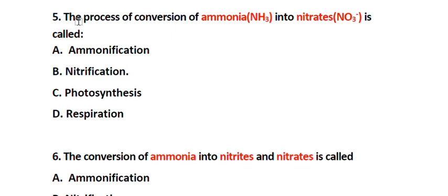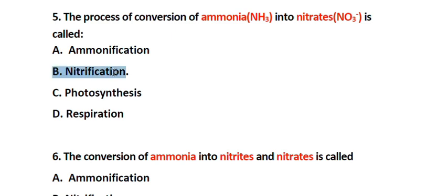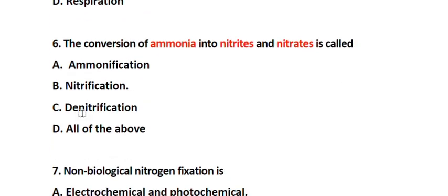Question number 5. The process of conversion of ammonia into nitrates is called: Option A. Ammonification, Option B. Nitrification, Option C. Photosynthesis, Option D. Respiration. The correct answer is Option B. Nitrification.